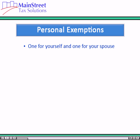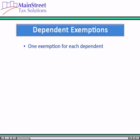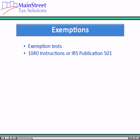You are generally allowed one exemption for yourself and, if you are married, one exemption for your spouse. These are called personal exemptions. You can take an exemption for each of your dependents that were alive for some part of the tax year, including a baby born during the tax year and a person who died during the tax year. There are various tests that must be met to claim a personal or dependent exemption — see Form 1040 instructions or IRS Publication 501 for more information.